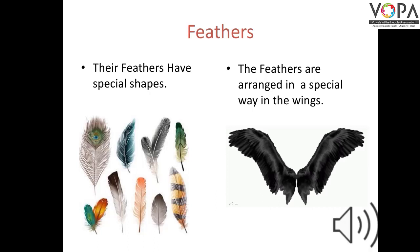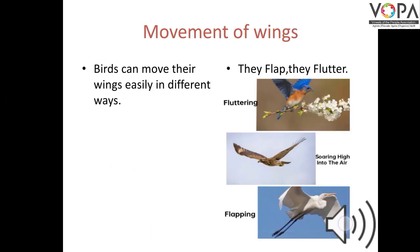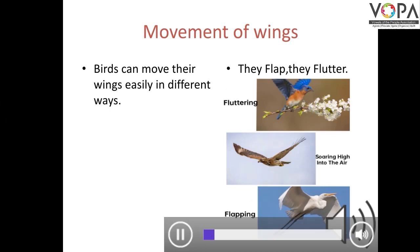Feathers — their feathers have special shapes and are arranged in a special way in the wings. Muscles — the wings have powerful muscles.